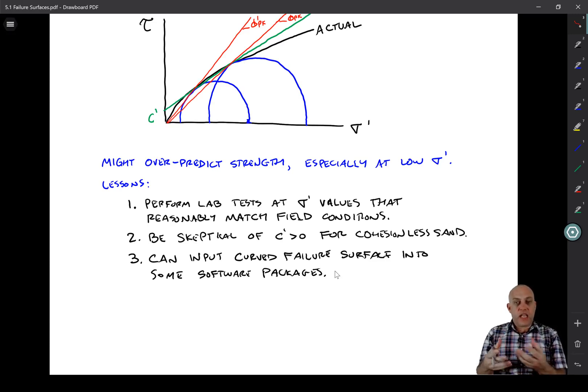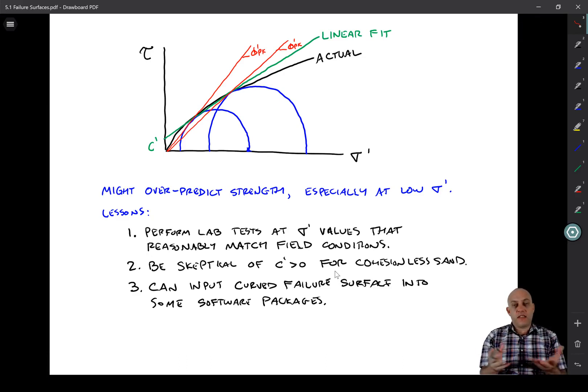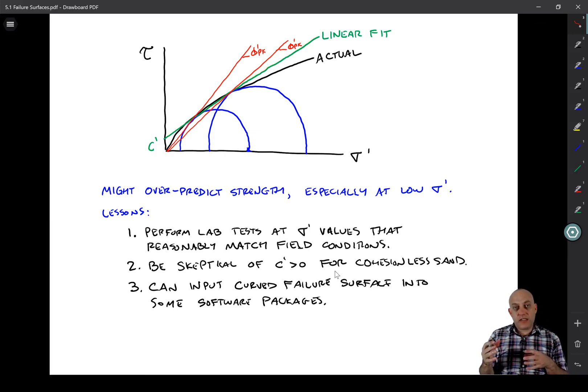If we get a c prime greater than zero for soil that we know is not cohesive, like let's say you scoop up a bunch of sand out of a bag and the particles are not cemented together, it's like beach sand. You might get a non-zero c prime if you do a Mohr-Coulomb fit to it. Well, you should be highly skeptical of that. You know that at zero effective stress the sand is loose and it will just fall apart. So that's a good indication that you actually have a curved failure surface and your straight line is actually lying to you. It might fit the data okay in the range where you did the test, but you know it's not going to fit very well at low confining pressure.